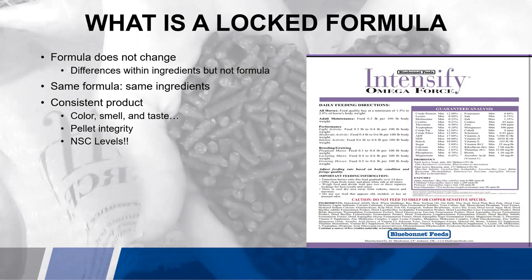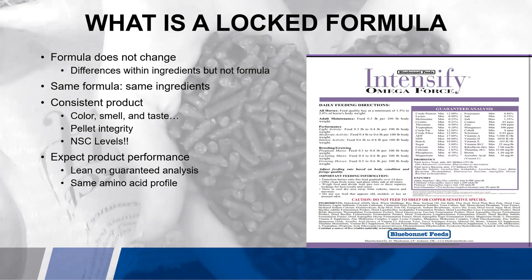Where this plays a big role is if you have a horse with special needs such as laminitis, Cushing's, or founder — now you can be a lot more mindful and aware of where your starches and sugars are coming from, and know that it's going to be consistent monthly and daily. You can expect your product performance because, contrary to a least cost formula, now you can lean on the guaranteed analysis. In this example, knowing you're getting 12% protein consistently from the same sources means you know you have the same amino acid profile — and can expect your horse to perform a certain way based on what the guaranteed analysis is telling you.